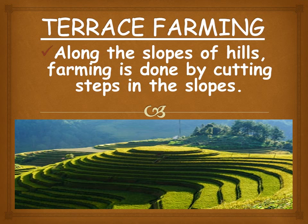To reduce the speed of water as it flows down and reduce soil erosion along the slopes of hills, farming is done by cutting steps in the slopes — this is called terrace farming. This automatically reduces the speed of water as it flows down, thus reducing soil erosion. The soil eroded from one step is deposited on the next step, which further reduces the loss of soil.